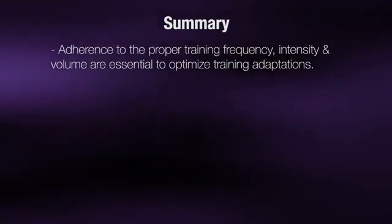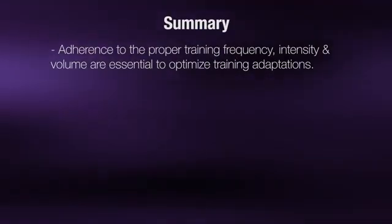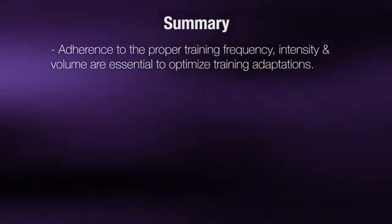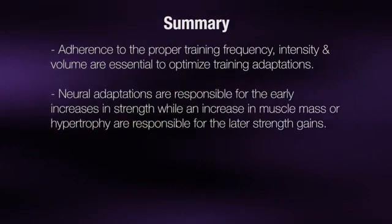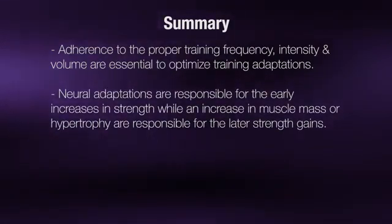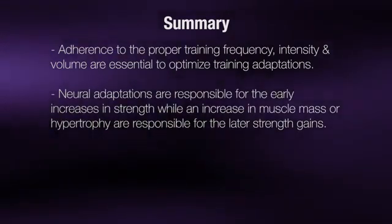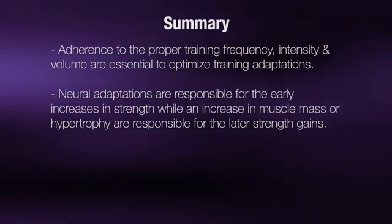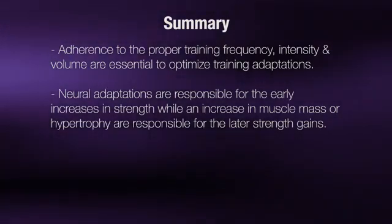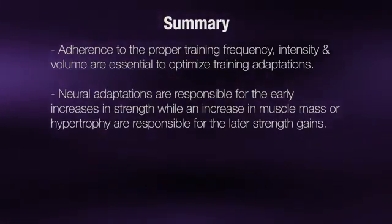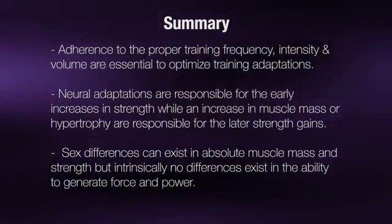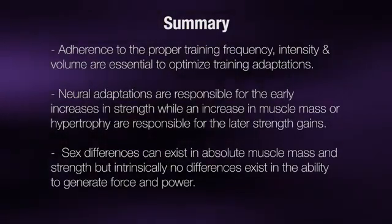In summary, adherence to proper training frequency, intensity, and volume are essential to optimize strength training adaptations. Neural adaptations are responsible for the early increases in strength, while an increase in muscle mass or hypertrophy is responsible for the later strength gains. When the stimulus is removed, as with detraining, muscle atrophy will occur and muscle mass and strength will revert back to pre-training values. Sex differences can exist in absolute muscle mass and strength, but intrinsically no difference exists in the ability to generate force and power.